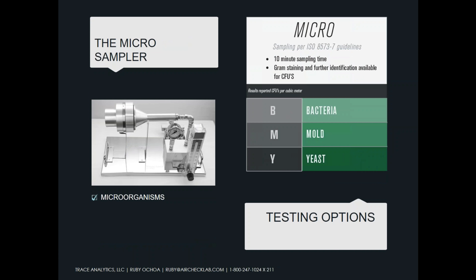For microorganisms, we use a sampler that is designed to connect directly to your pressurized lines, whether they be compressed air, nitrogen, or any other inert gas. We can provide you with the minimum that SQF requires, which is a total plate count. We can also provide counts for bacteria, mold, and yeast, as well as further identification if results are above your limits, to determine what type of bacteria it is.